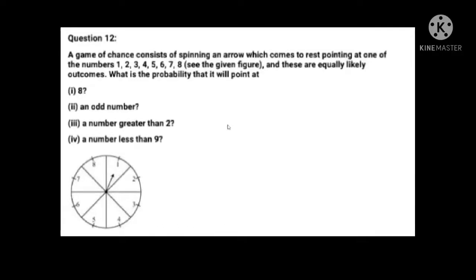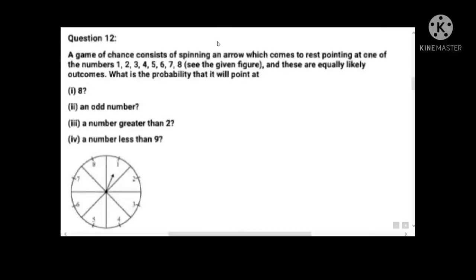Question number 12: A game of chance consists of spinning an arrow which comes to rest pointing at one of the numbers 1, 2, 3, 4, 5, 6, 7, 8 — see the given figure. These are equally likely outcomes. This is also a case-based question type. There are eight markings. When we rotate the spinner, the arrow will stop at any one of the numbers. Total number of possible outcomes is eight.